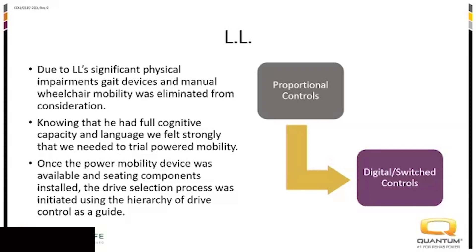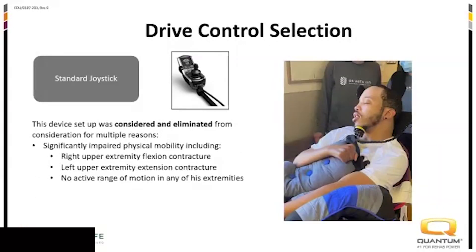We were able to get a demo chair available and try some seating options. Following the hierarchy of driving, he was not able to use a standard joystick. He didn't have active movement anywhere else — no little finger movement, no toe. He had no other active movement other than opening and closing his jaw, and he really didn't have head movement back and forth.